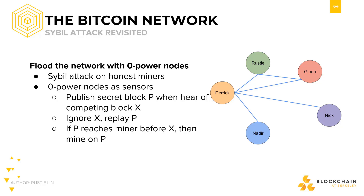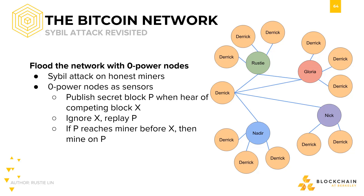Now for something even bigger. Think back to the first module where we discussed Sybil attacks and how it's not beneficial to have more identities, because in proof-of-work we make computational power the limiting factor. Well, if we're clever enough, we can launch a Sybil attack in another kind of way, leveraging network topology and latency. Let's say Derek has the ability to flood the network with nodes — these could be his miners, or if he's clever enough, he could even write malware that makes victims' computers act like zero-power nodes, just sitting there listening to the Bitcoin network and relaying information back to Derek, acting like sensors.